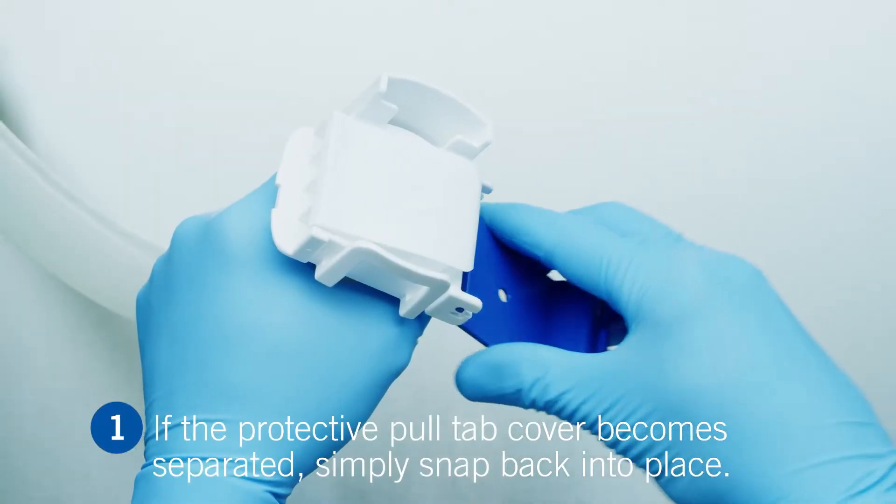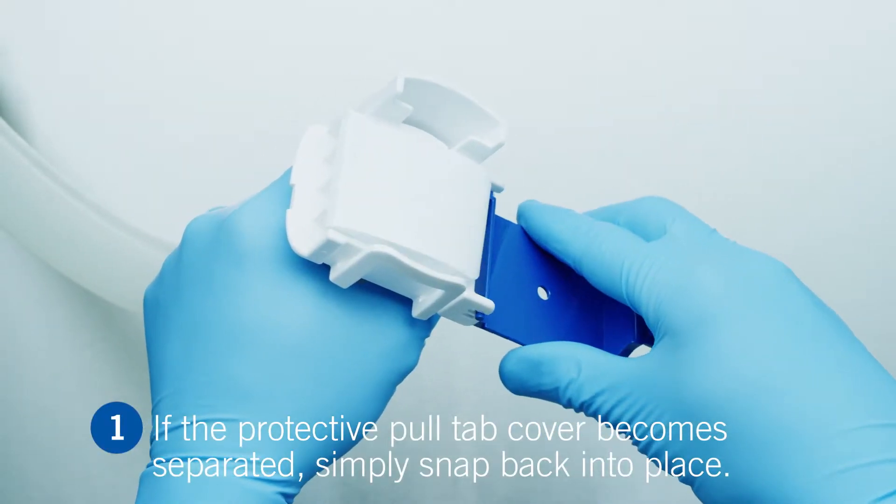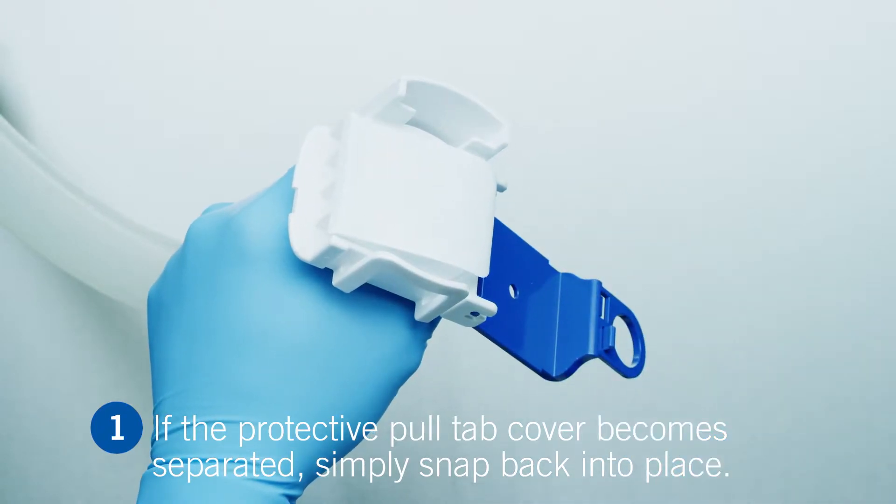If the protective pull-tab cover becomes separated from the connector during handling, simply snap it back into the hinges on the connector.